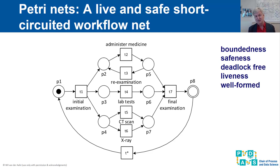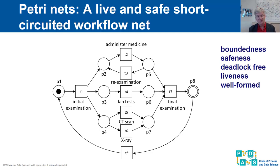A net is in a deadlock if no transition can fire — a deadlock is a reachable marking in which nothing can happen anymore. Liveness is the most complex notion. A transition is live if, no matter what path we follow, it is always possible to fire that transition again and again. A transition can never become permanently disabled. If in a net all transitions are live, the net is called live.